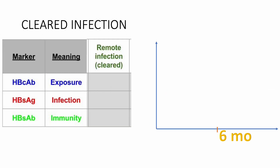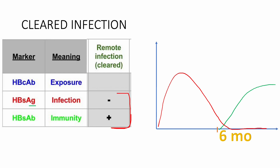If the person has cleared the infection, the surface antigen becomes negative. The person has developed immunity, so the surface antibody has eliminated all remnants of the surface antigen. This person now has hepatitis B surface antibody and no surface antigen. The fingerprint confirming prior infection — rather than vaccination — is the core antibody, since the core antigen is not found in the vaccine. So this person will also have core antibody.